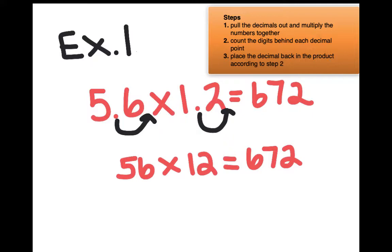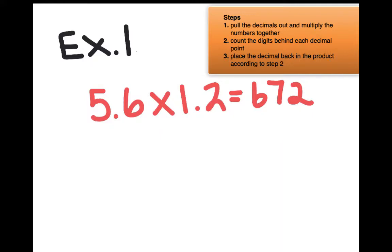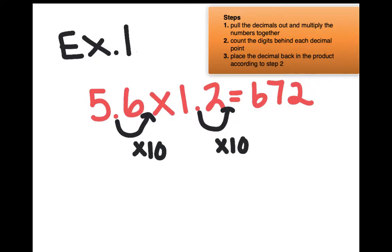But our original problem was not 56 times 12. It was 5 and 6 tenths times 1 and 2 tenths. What we did is we multiplied 5 and 6 tenths by 10 to make it 56, and we multiplied 1 and 2 tenths by 10 to make it 12, to make this problem easier. So altogether, we multiplied by 100. That means we now need to divide by 100.